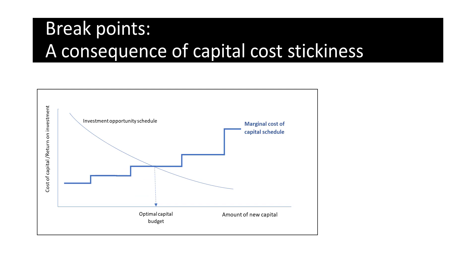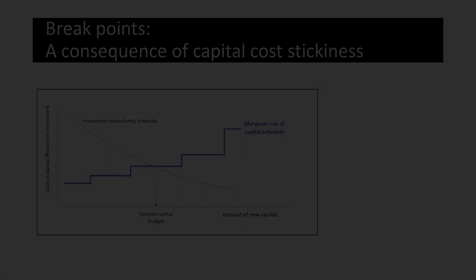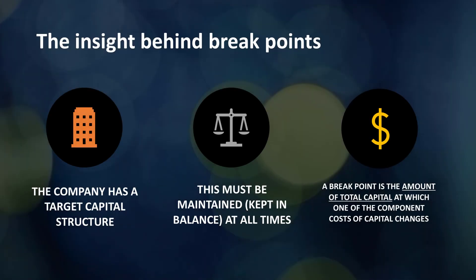Adding additional complexity, equity and debt costs do not necessarily change at the same points. The identification of a company's capital break points is underpinned by three main insights. Firstly, the company has a target capital structure — in other words, it has identified a preferred mix of equity and debt.